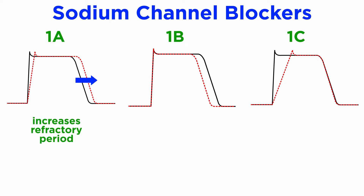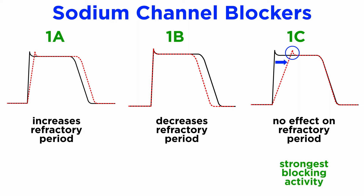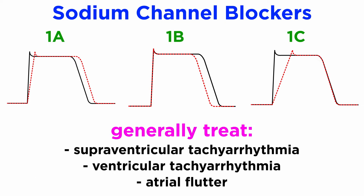1a increases the effective refractory period, 1b decreases it, and 1c has no effect on the effective refractory period. These differences are mediated through the magnitude of their effect on voltage-gated sodium channel blockade, with 1c having a stronger blockade than both 1b and 1a, and 1a having a stronger blockade than 1b. Class 1 drugs are used to treat tachyarrhythmias such as atrial flutter, supraventricular and ventricular tachyarrhythmias, with 1c used primarily in emergencies for its strong blockage of voltage-gated sodium channels.